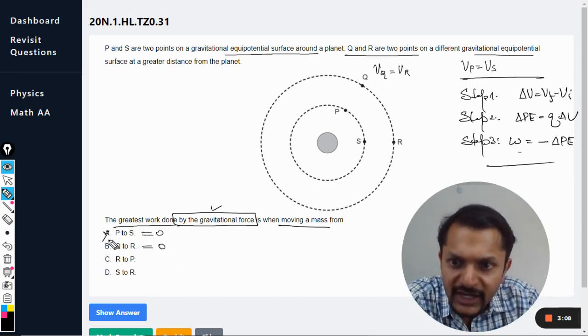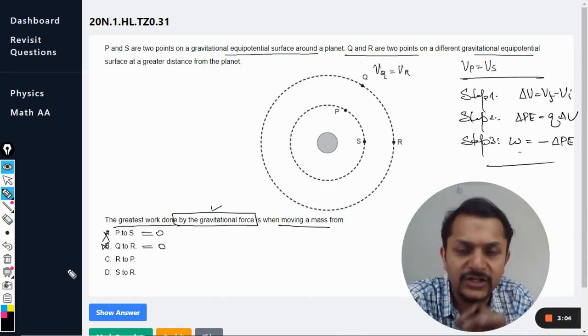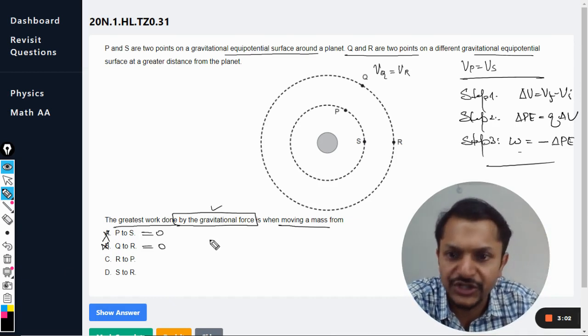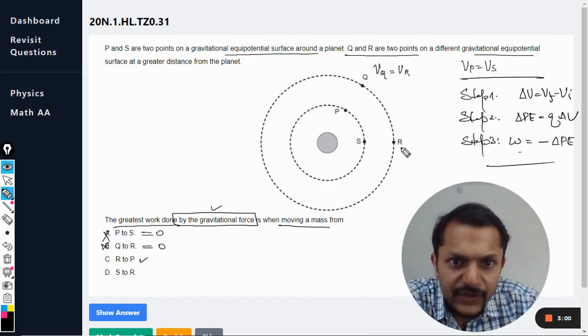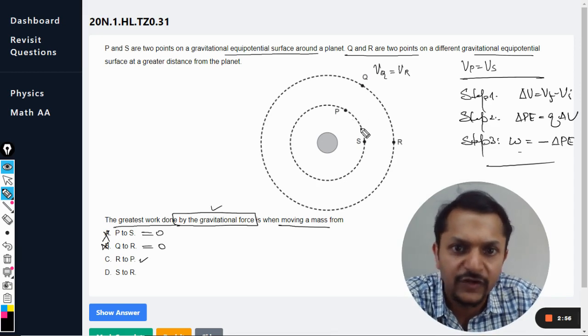So A and B are definitely wrong. Work done in A and work done in B is zero because the potential is not changing. Now R to P, so whether you call it R to P or you call it R to S, it's the same thing because potential of P and S is the same.